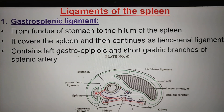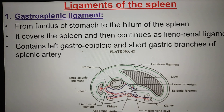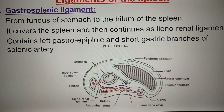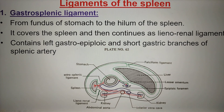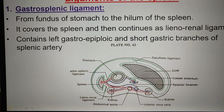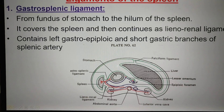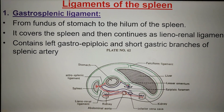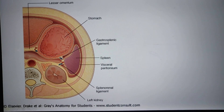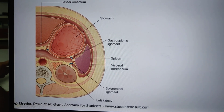The gastrosplenic ligament extends from the fundus of the stomach to the hilum of the spleen. It covers the spleen and then continues to become the lienorenal ligament. It contains the left gastroepiploic and short gastric branches of the splenic artery.